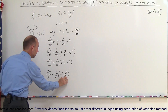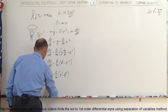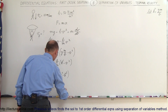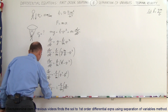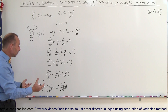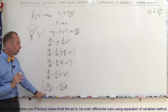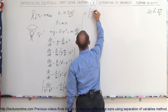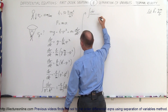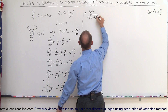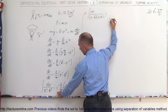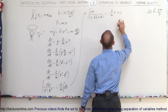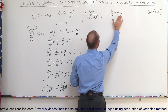Now we're ready to separate the variables — putting dv on one side and dt on the other. We can write dv divided by the quantity (v squared minus k squared) equals minus b over m times dt. Now we're ready to integrate both sides. The right side integrates to minus b over m times t plus a constant of integration c1.